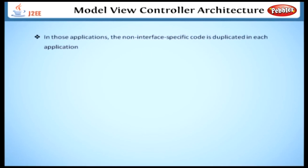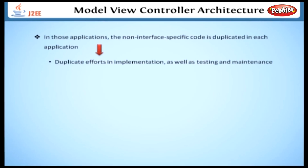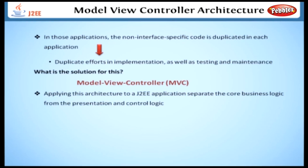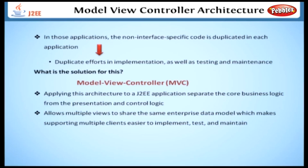In those applications, the non-interface-specific code is duplicated in each application, resulting in duplicate efforts in implementation, as well as testing and maintenance. So, what is the solution for this? The answer is MVC. By applying the Model View Controller architecture to a J2EE application, you can separate the core business logic from the presentation and control logic. This kind of separation allows multiple views to share the same enterprise data model, which makes supporting multiple clients easier to implement, test, and maintain.